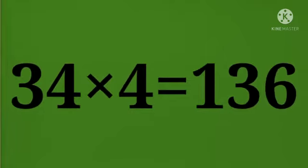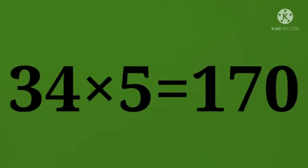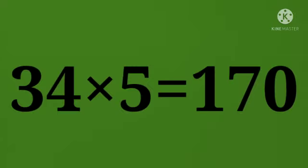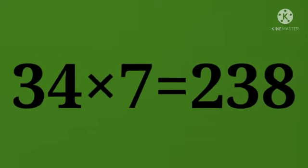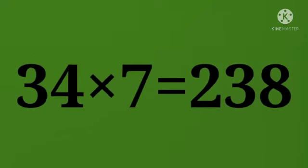34 times 4 equals 136. 34 times 5 equals 170. 34 times 6 equals 204. 34 times 7 equals 238.